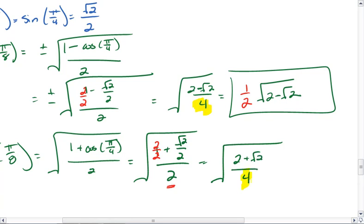We can pull the 4 outside of our radical, giving us 1 half, and leaving us with root of 2 plus root 2. That's your answer for cosine.